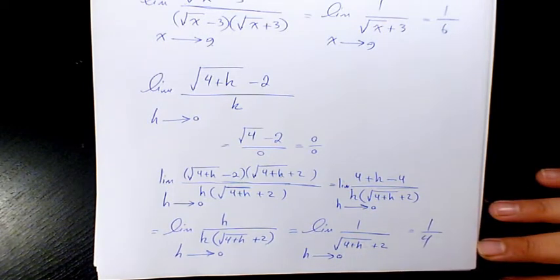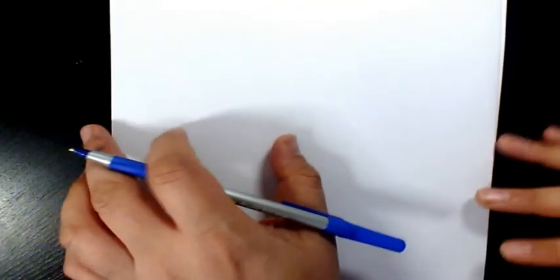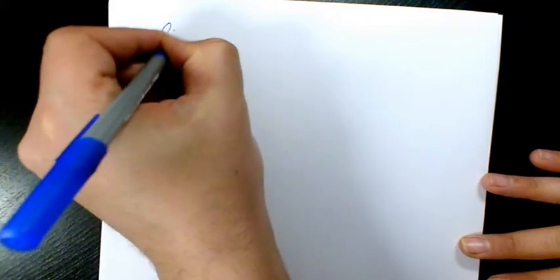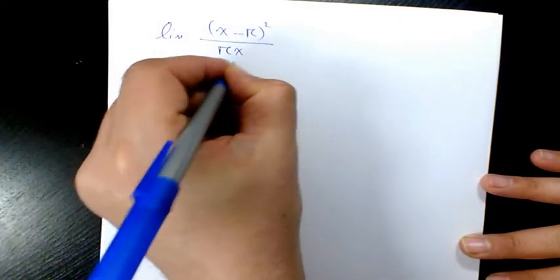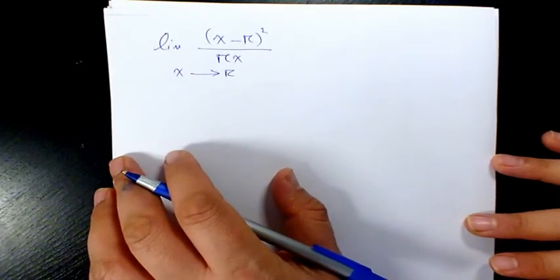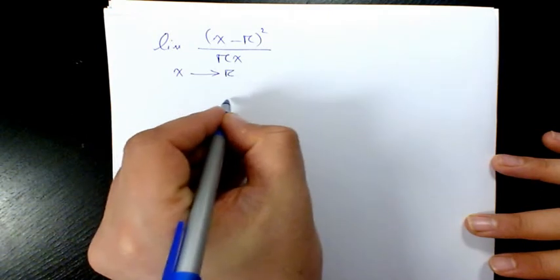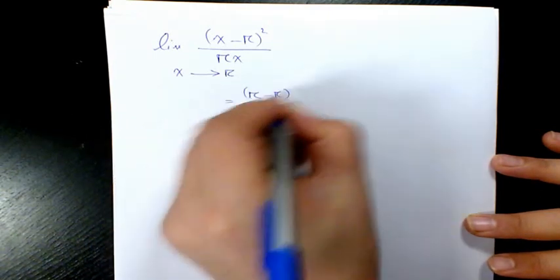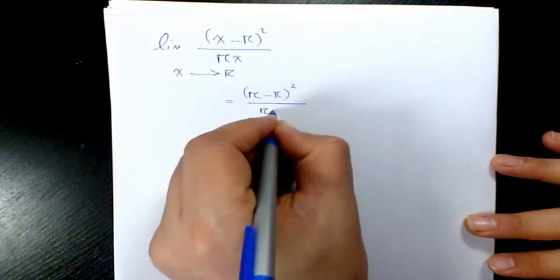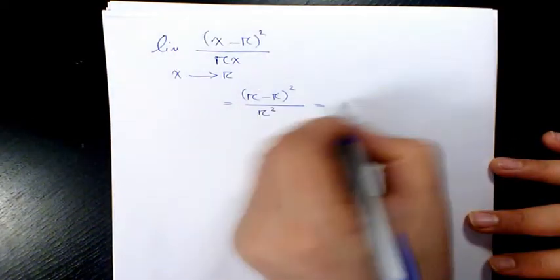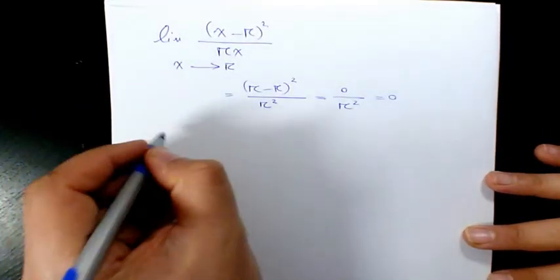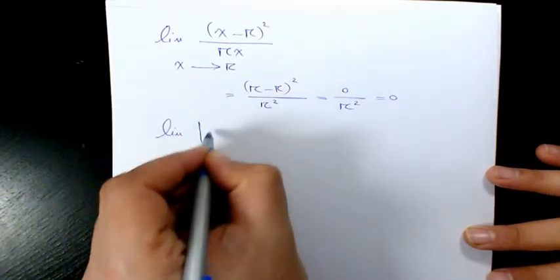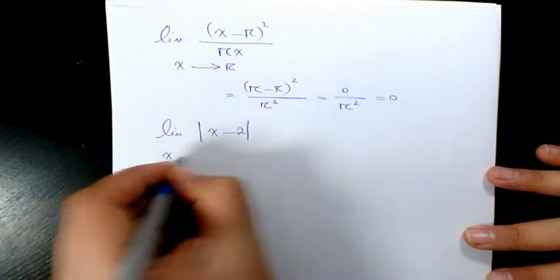Next one: the limit of (x minus pi) squared over (pi times x) when x is approaching pi. We have (pi minus pi) squared divided by pi times pi, which is pi squared. The answer is 0 over pi squared, which is 0.